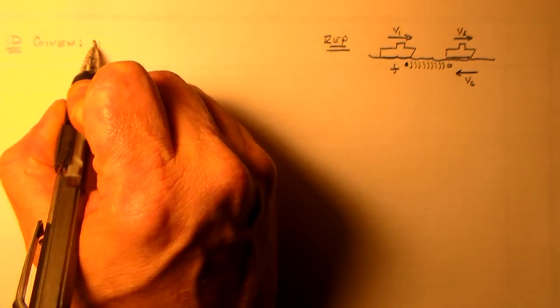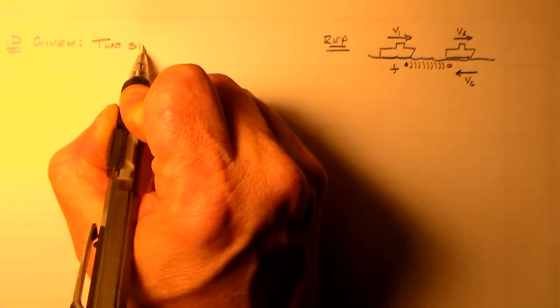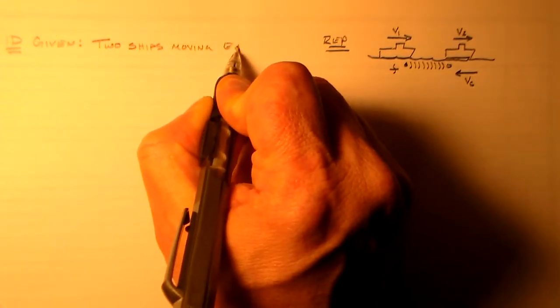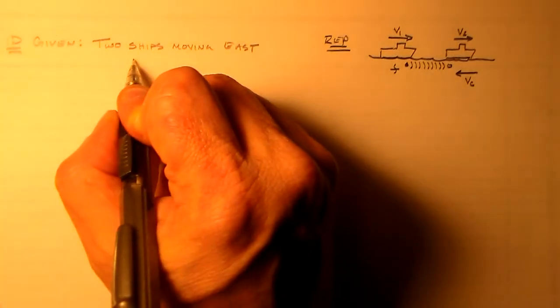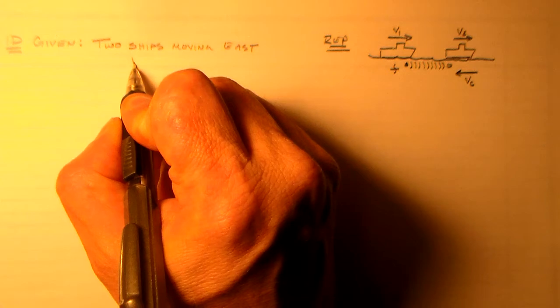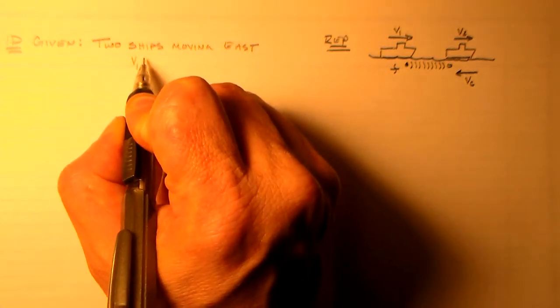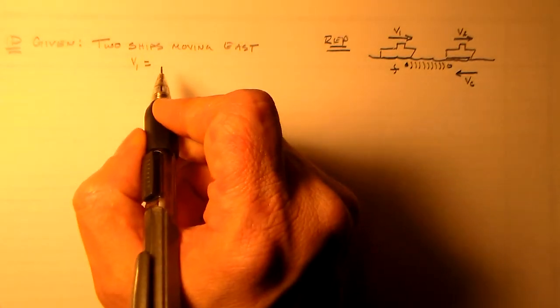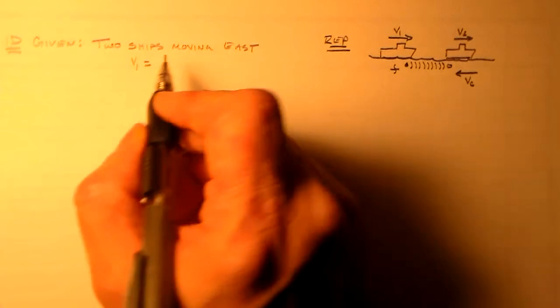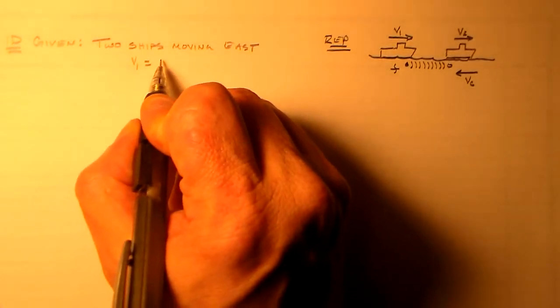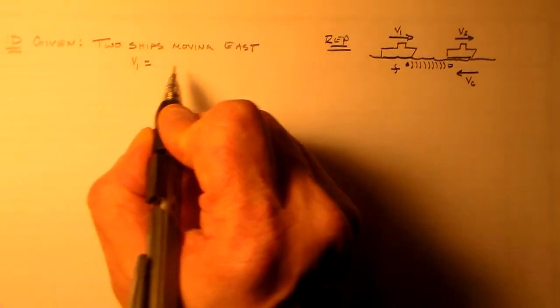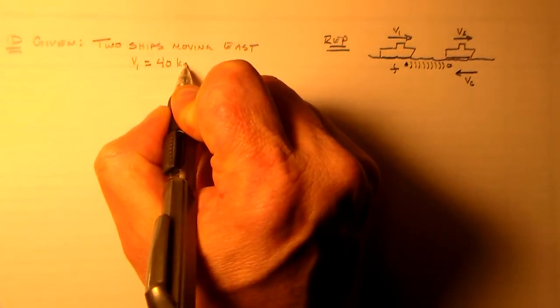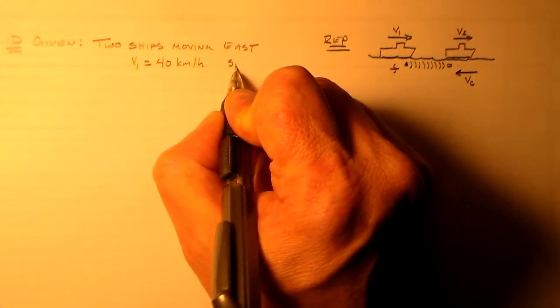So in this case, we had two ships moving east. So we've got these two ships moving east with relative to some observer out on a pier or a quay or some other fun nautical-sounding thing have some sort of speed. So let's say V1 is for this guy. This guy, I remember, is moving faster than this guy. So let's say he's moving 40 kilometers per hour.